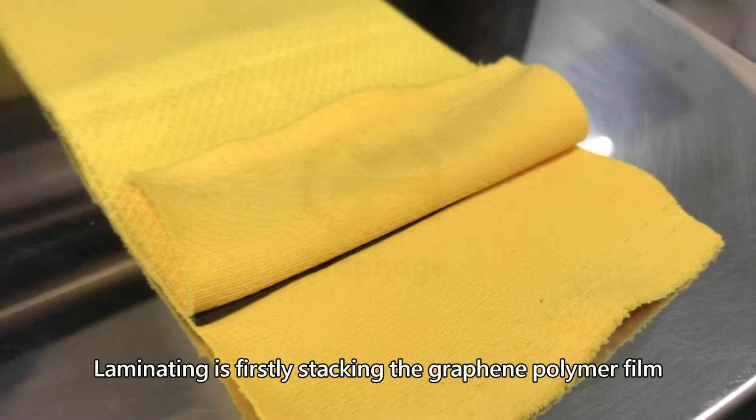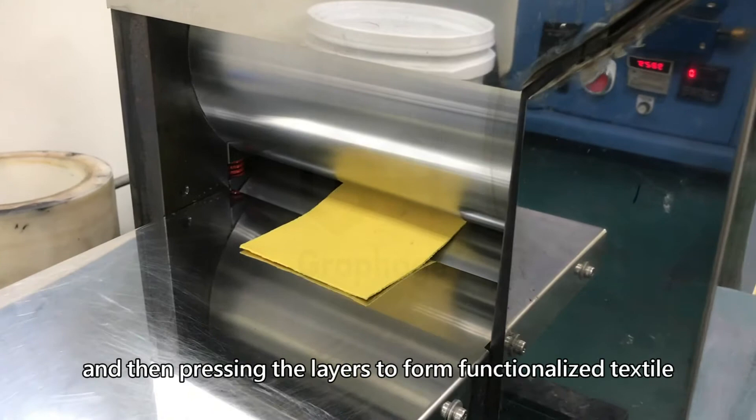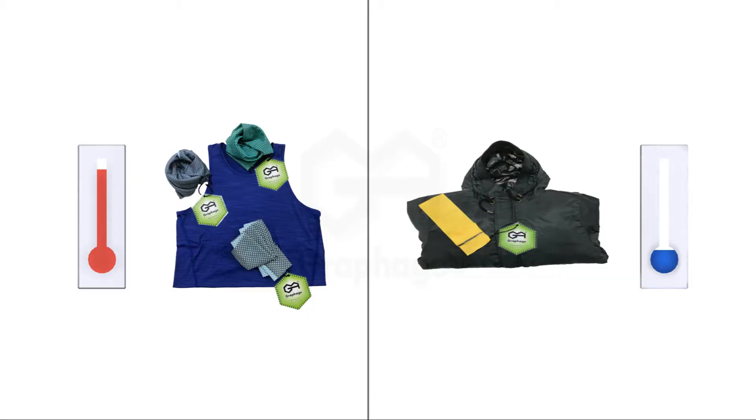Laminating is firstly stacking the graphene polymer film, glue, and textile, and then pressing the layers to form functionalized textile.